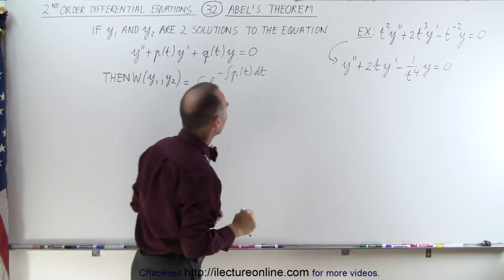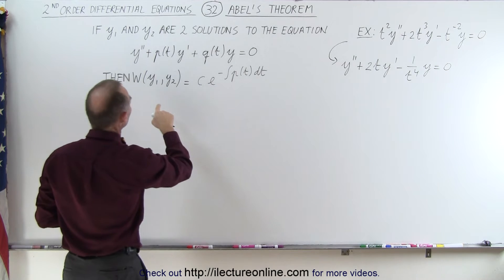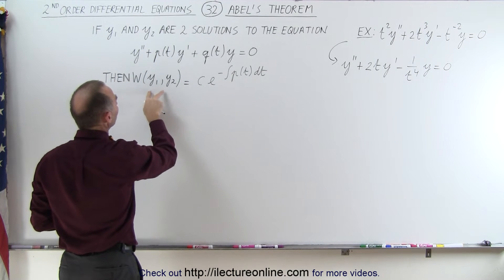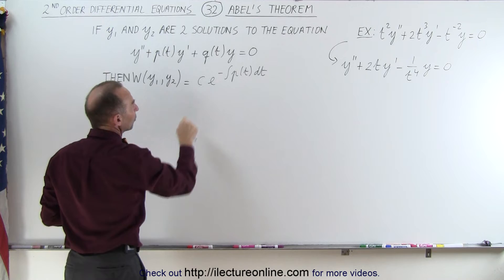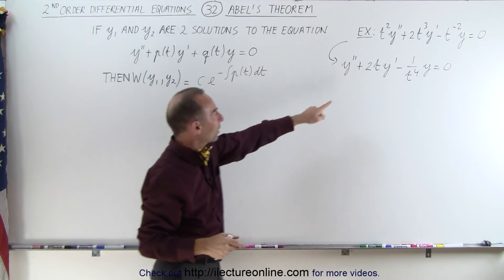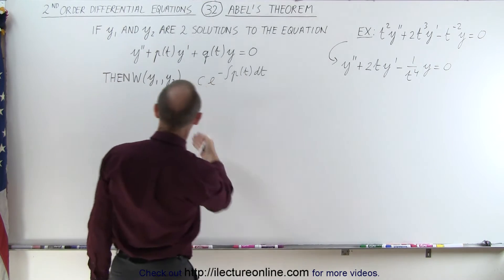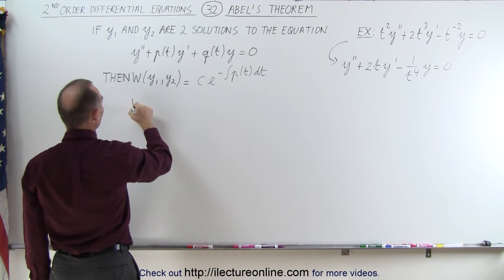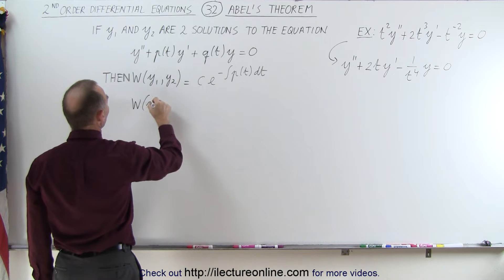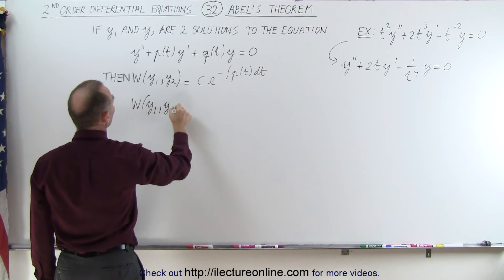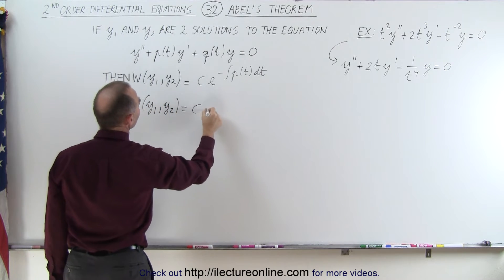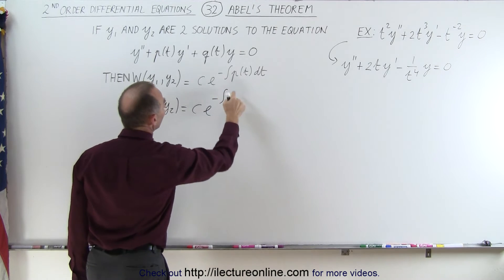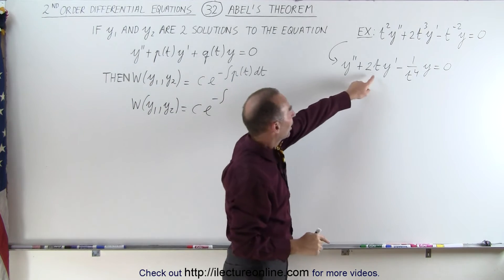Now Abel's theorem tells us that the Wronskian of the two solutions equals this. So let's first find the Wronskian. So we can say that the Wronskian of y1 and y2 must equal c times e to the minus integral of p of t, which in this case is 2t. We put in 2t dt,